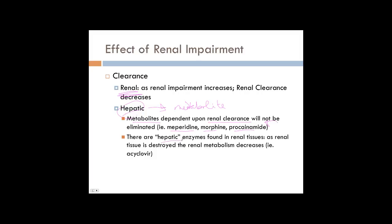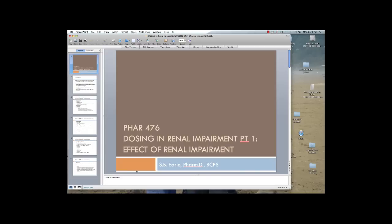There are also P450 enzymes found in renal tissue, and if those enzymes are destroyed because of renal impairment, you're going to see a decrease in the clearance of those drugs too. An example of that is acyclovir. We don't spend too much time on it because it's fairly uncommon. That's it — I'll see you at part two.